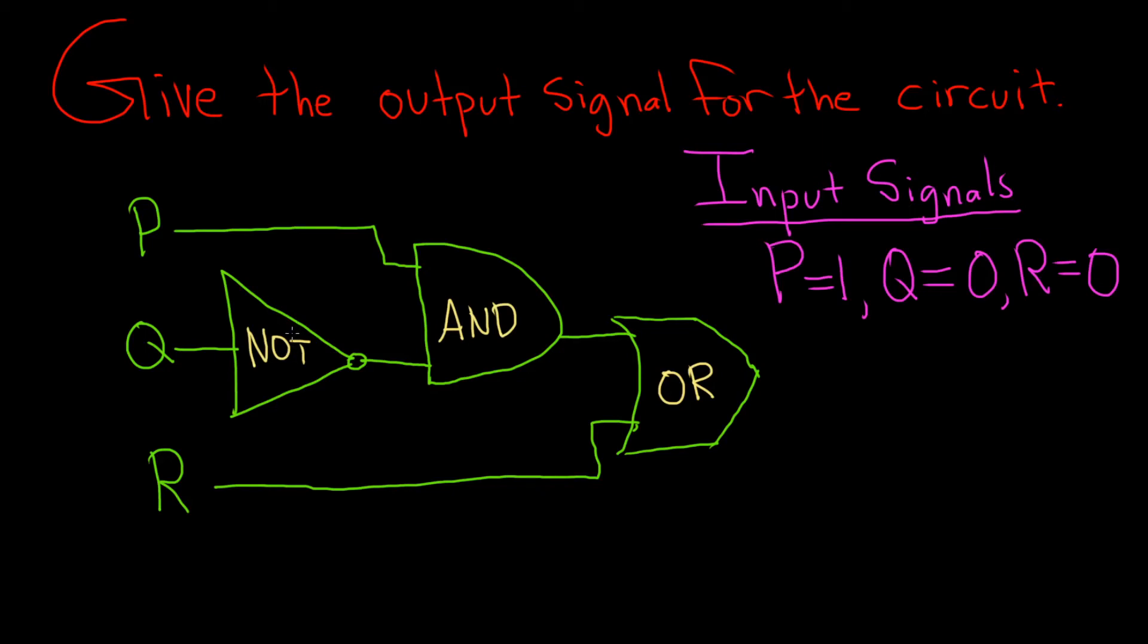Give the output signal for the circuit. We have the input signals 1, 0, and 0.